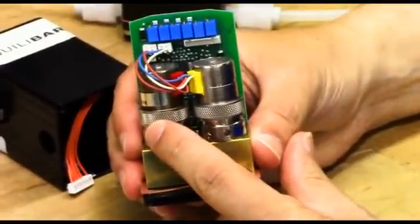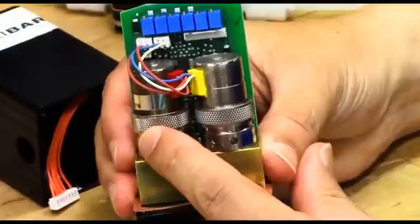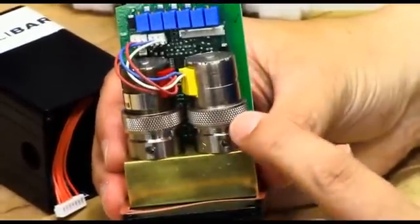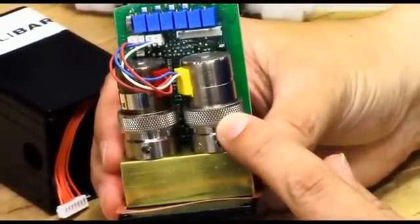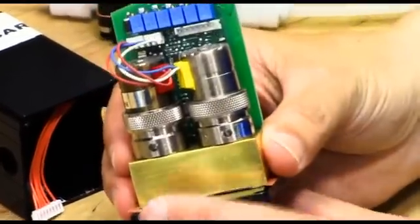One solenoid valve is energized to allow air into the system to increase the pressure. The other solenoid valve is energized to allow air to vent from the system and decrease the pressure.